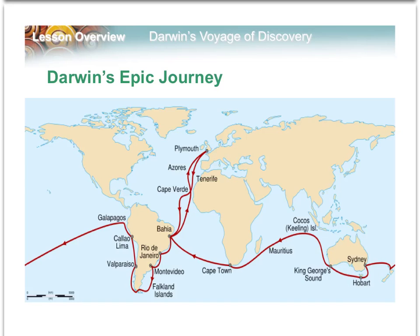Here you see a map of Darwin's voyage, which took them about five years to complete. It was only supposed to take two, maybe three years. They left from England, sailed down to South America, and bounced around on the east coast of South America, collecting specimens while the ship's captain was mapping the shoreline. At the southern tip of South America, Darwin's voyage actually took him across land while the ship sailed around and picked him up on the other coast.